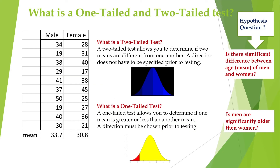What is a one-tailed and two-tailed test? A two-tailed test allows you to determine if two means are different from one another; a direction does not have to be specified prior to testing. In a one-tailed test you determine if one mean is greater or less than another, and the direction must be chosen prior to testing. For example: 'Is there a significant difference between the age of men and women?' is an open-ended question — hence it is a two-tailed test. But if rephrased as 'Are men significantly older than women?' that is a close-ended question, and we would use the one-tailed test.